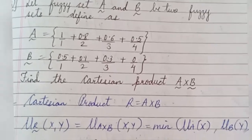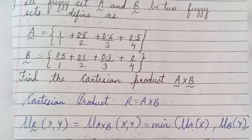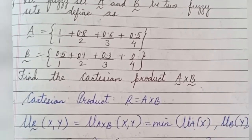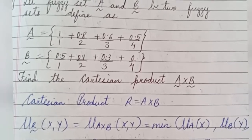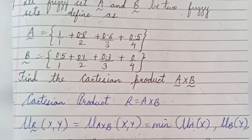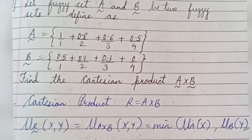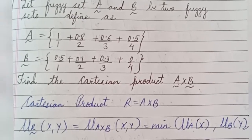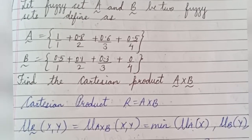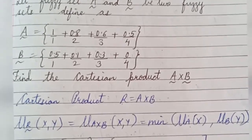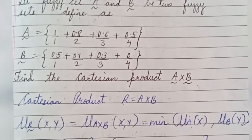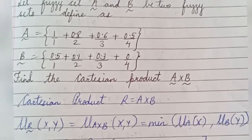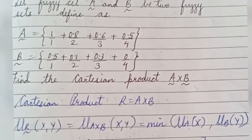Welcome back to the fuzzy system series. In my previous video I discussed the Cartesian product of a crisp set (classical set) and the Cartesian product of a fuzzy set. In this video, let's discuss an example based on the Cartesian product of a fuzzy set.